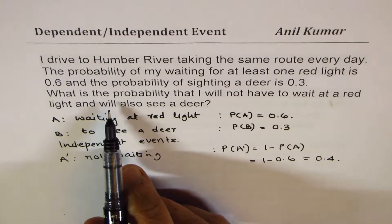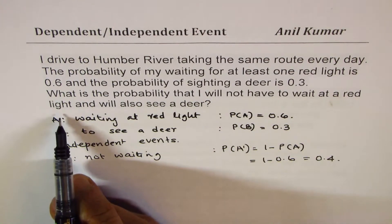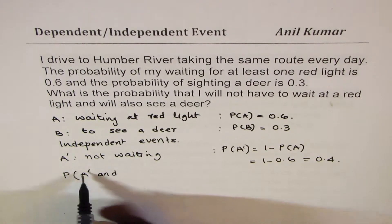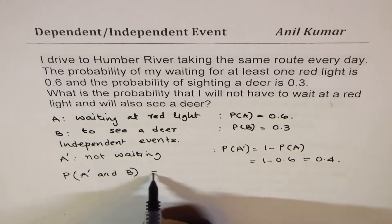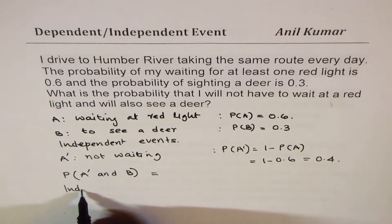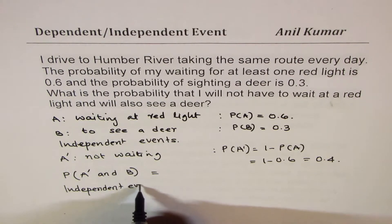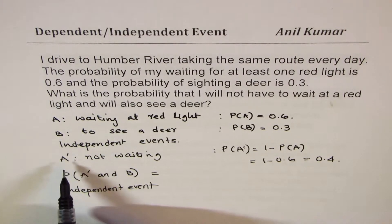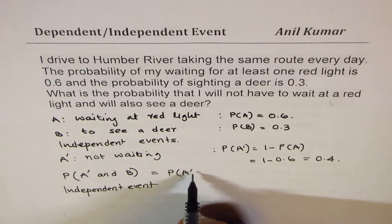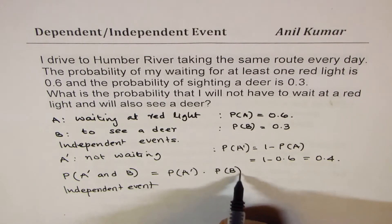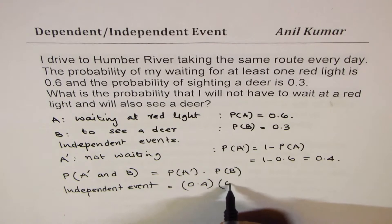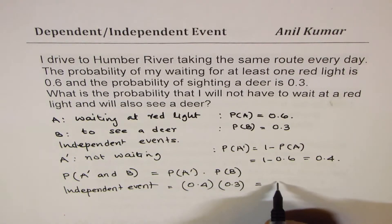Now what we need to find is the probability that I will not have to wait at the red light and will also see the deer — that is, the probability of A prime and B. Since A and B are independent events, A prime and B are also independent, and therefore their probability will be the product of the individual probabilities. So it will be 0.4 times 0.3, and that gives us 0.12.